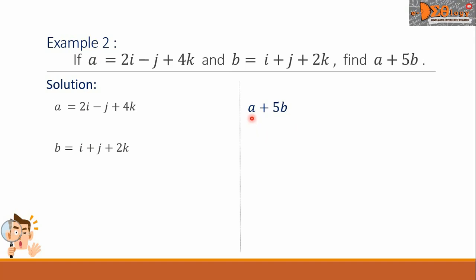For the a, we can just simply copy the value here. Now, let us evaluate the 5b. We are going to multiply the constant 5 to vector b. So, 5b equals 5 times the quantity i plus j plus 2k. And this will be simplified into 5i plus 5j plus 10k.